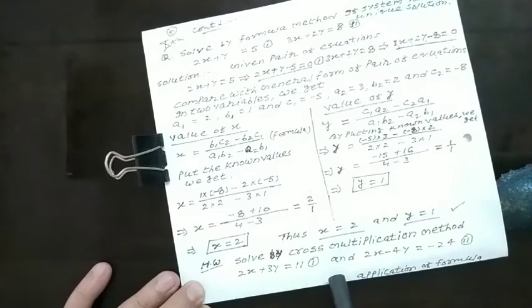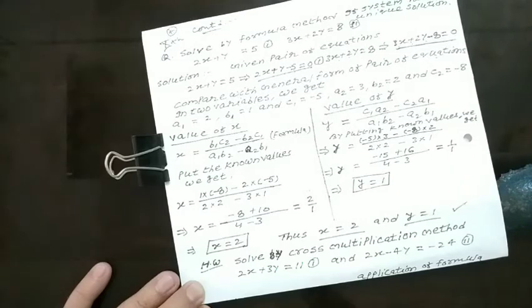If a1 upon a2 is not equal to b1 upon b2, then we proceed. Because when the system of equations has a unique solution, we proceed. Otherwise, we leave the solution. Thank you.